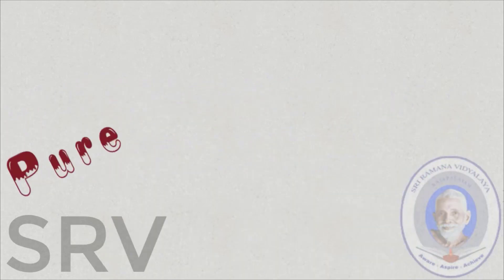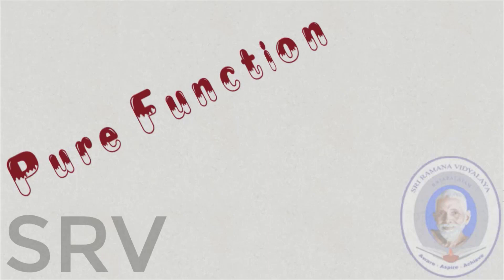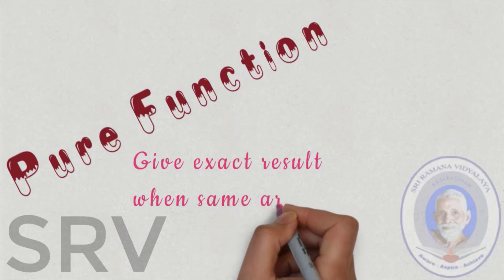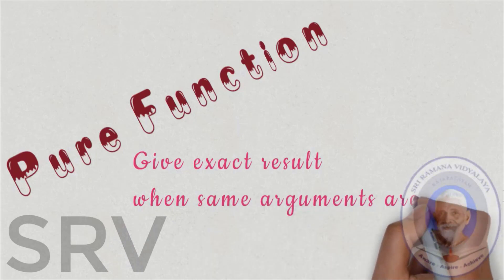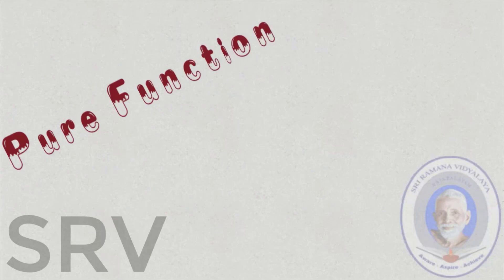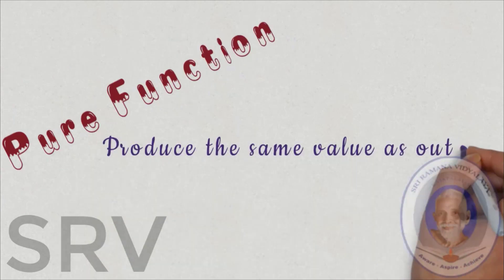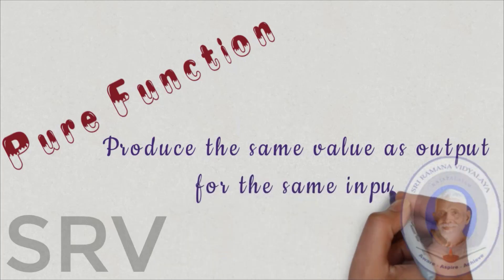Pure function. The definition of pure function is a function which gives exact result when the same arguments are passed. The meaning of the definition is, this function produces the same value as output for the same input.